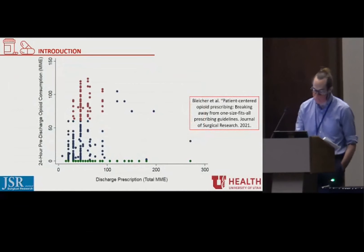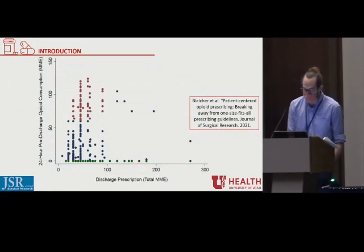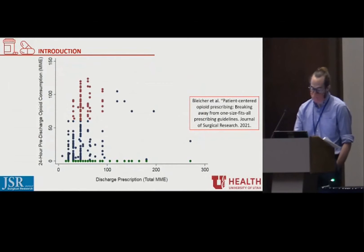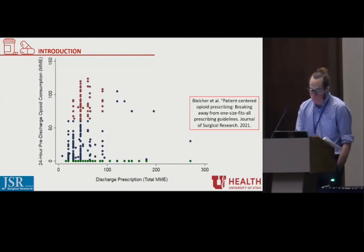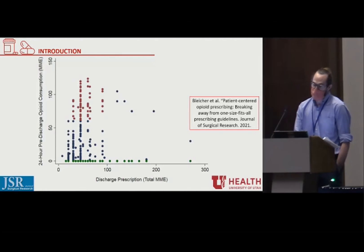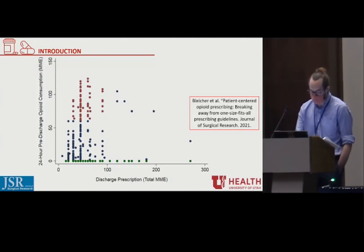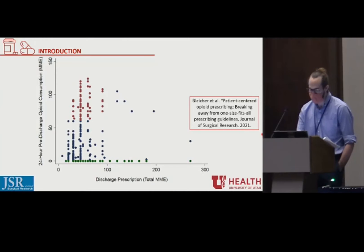Another issue with current guidelines is that they don't have an ability to be patient-centered. Most suggest prescribing a set number of pills based on procedure type alone. In a previous paper published by our group, we argued that future guidelines should be more patient-centered, and we recommend doing this by using the metric 24-hour pre-discharge opioid consumption, or 24-hour PDOC. At our institution currently, we are not prescribing based on this metric at all, and there is significant variability in how we prescribe opioids to our patients.